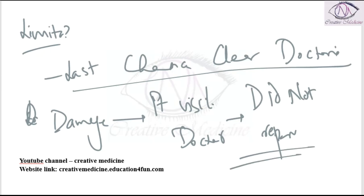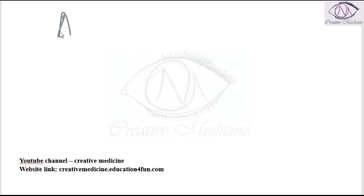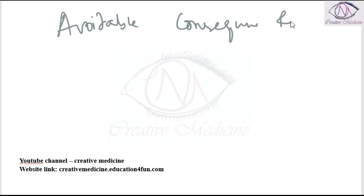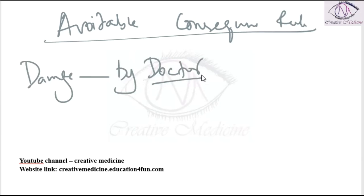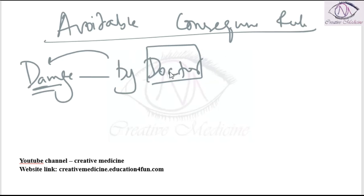The second limitation is the avoidable consequence rule. In this rule, the original damage has been done by the doctor, but due to negligence, the extent of the damage is increased. If the doctor had avoided the original damage, the patient's damage would not have increased. That is the avoidable consequence rule.